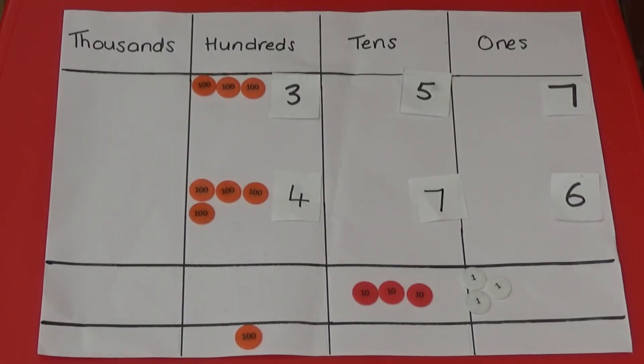Finally, I need to add my 100s. 300s and 400s equals 700s. I also need to add the 100 under the answer box. So I now have 800s.